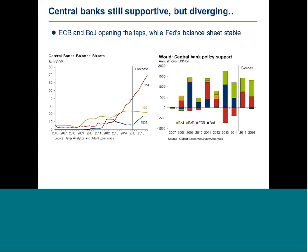Overall, central bank policy will remain supportive but diverging. Central bank support will continue in Japan and will actually increase later this year. The Fed will remain pretty much stable in terms of its balance sheet. The ECB will expand its balance sheet quite dramatically this year. As you can see on the right-hand chart, central bank support will be mainly driven by Japan and Europe.